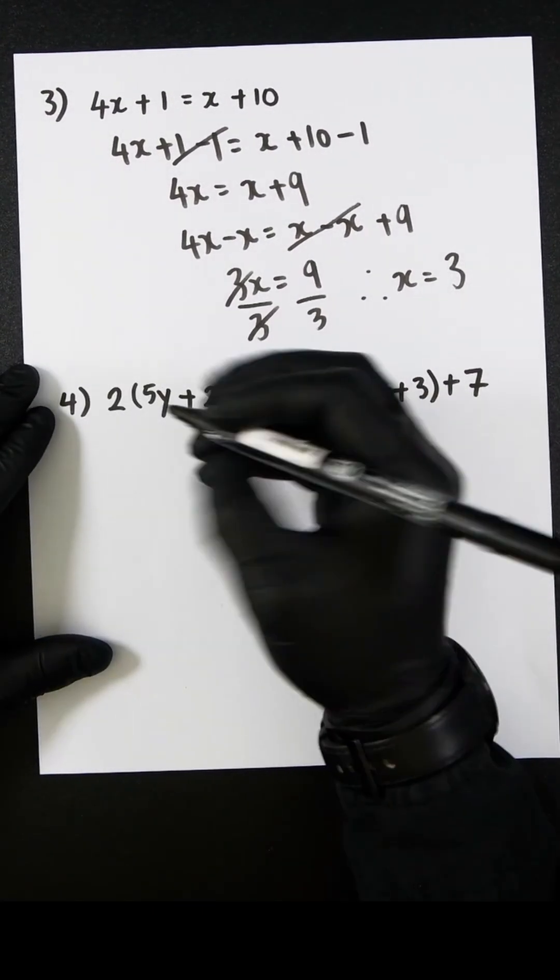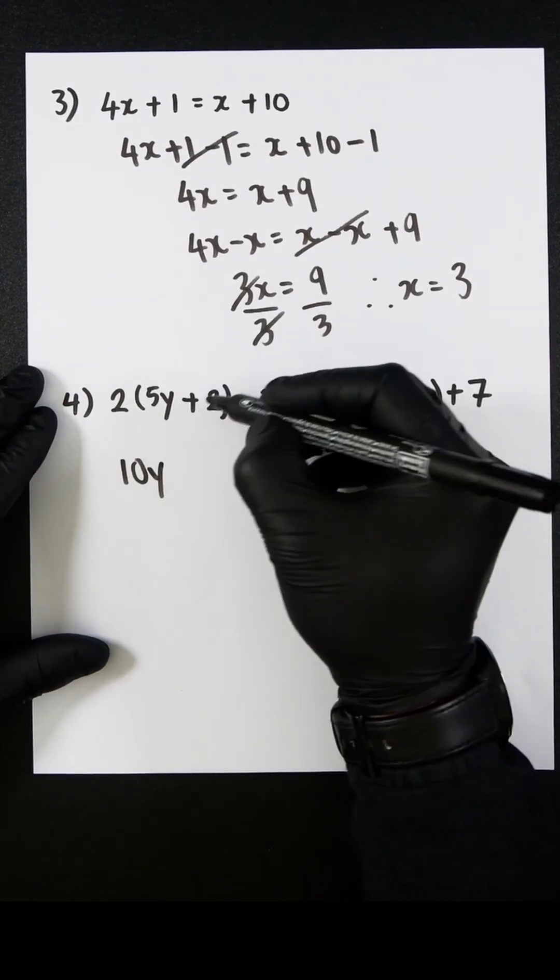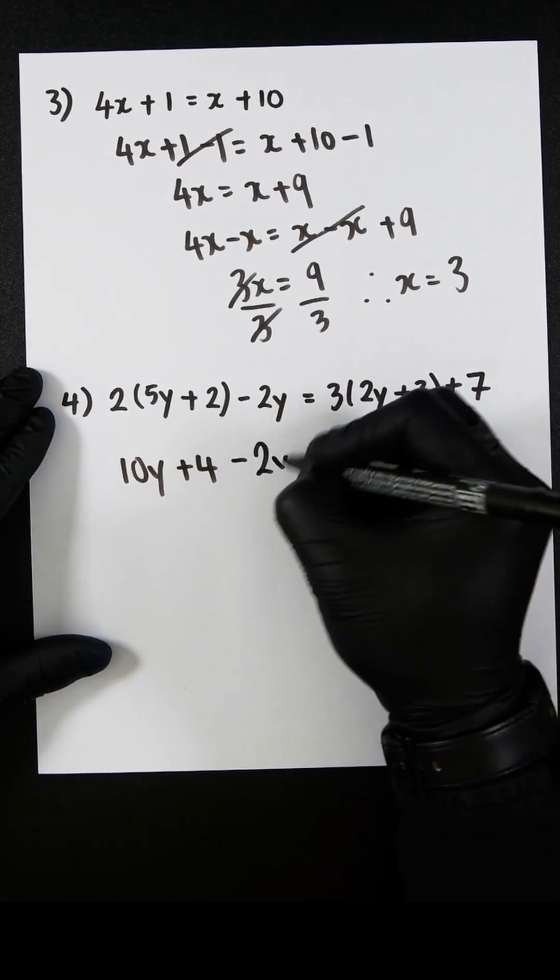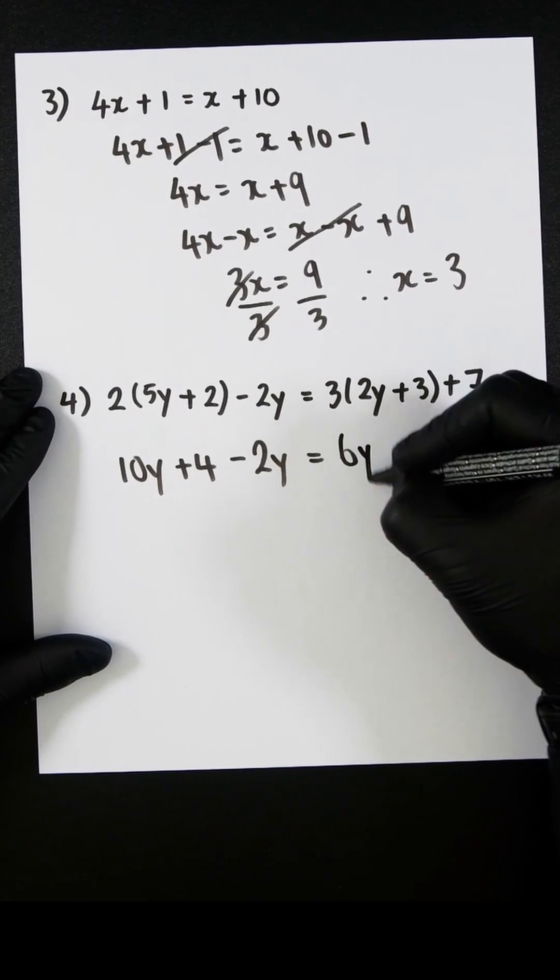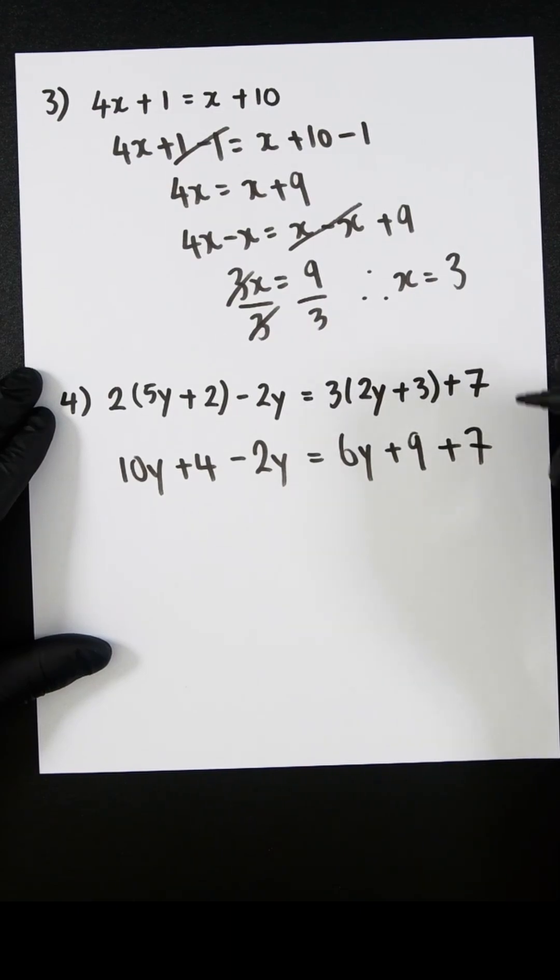So let's firstly expand this first part. 2 times 5y is 10y. 2 times 2 is 4 minus 2y. And on the right-hand side, we're going to do 3 times 2y, which is 6y. And 3 times 3, which is 9. And then we have this 7 here.